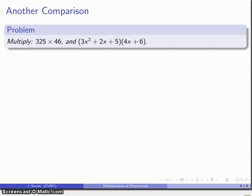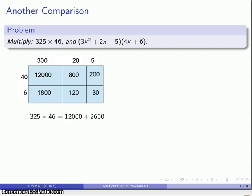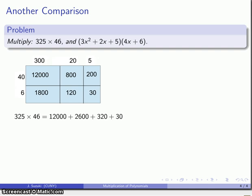Well we could do the same multiplication using the area model. So again if I wanted to do this multiplication using the area model I'd break the 325 and the 46 into convenient pieces. 325, 46 and then I'd find the areas of all those rectangles and add them together to find the product.